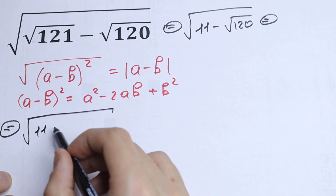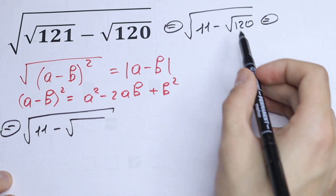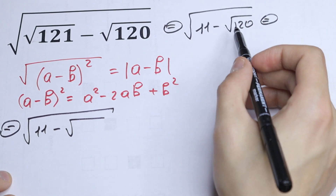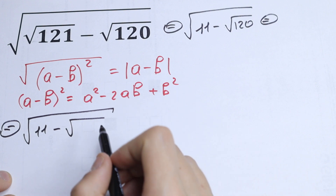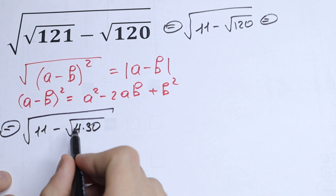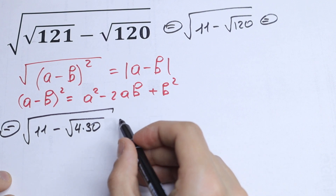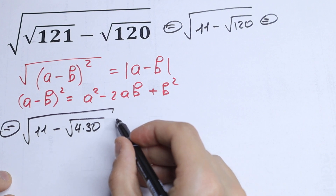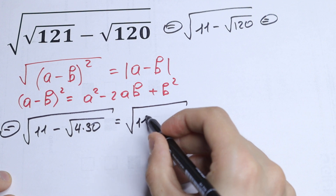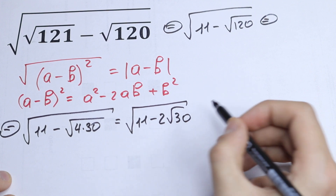We need 2, but we have 120. Let's express 120 as 4 times 30. Then we will take the square root of 4, which gives us our 2. So we get: square root of 11 minus 2 times the square root of 30.